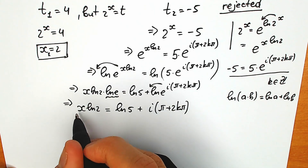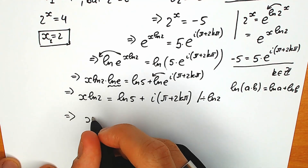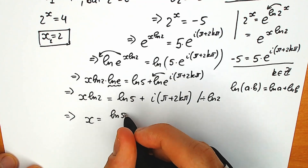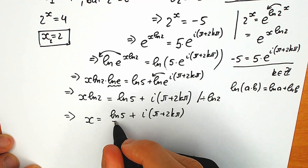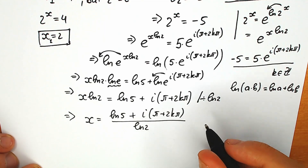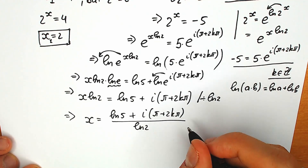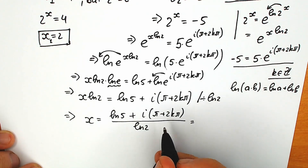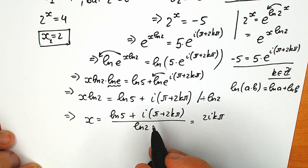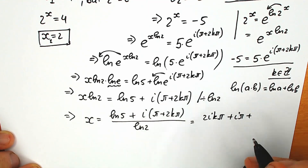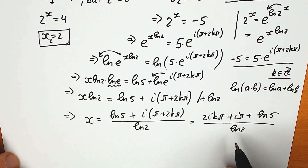We need to find x, so dividing both sides by ln 2. Our x equals: natural log 5 plus i times (π + 2k·π), all over natural log 2, where k is an integer. We can rewrite this as (2ik·π + i·π + ln 5) all over ln 2. This is our complex root.